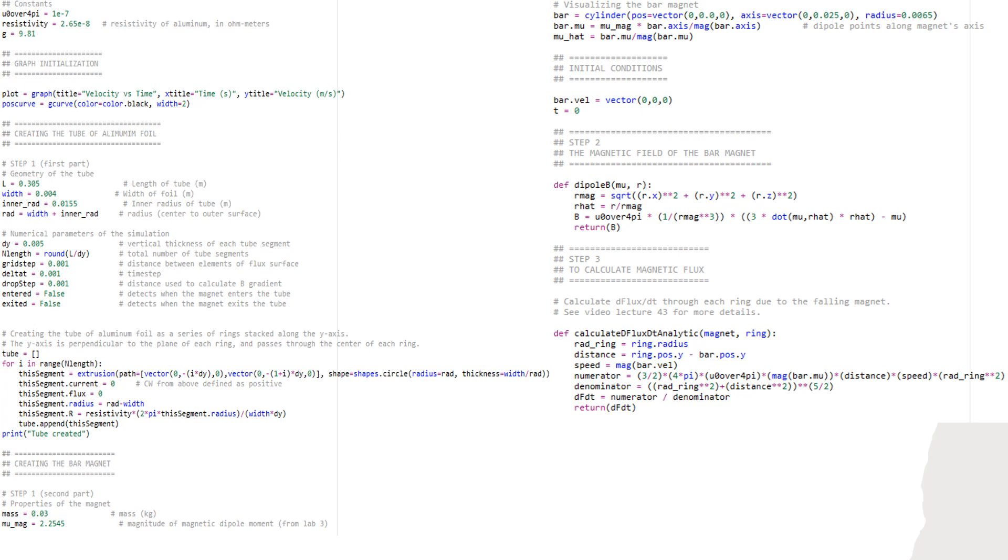Here is the first part of our code to the experiment. First we have our constants, then we add in our data measurements for the tube in step 1. The rest of step 1 was given to us and was used to create the tube of foil. To create the bar magnet on the bottom left, we added our own weight for the magnet and the magnetic dipole moment from lab 3.